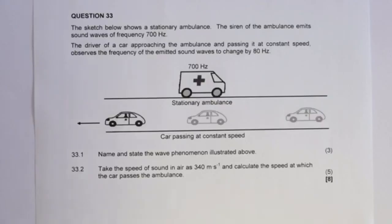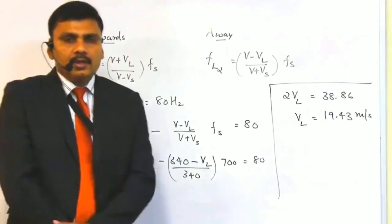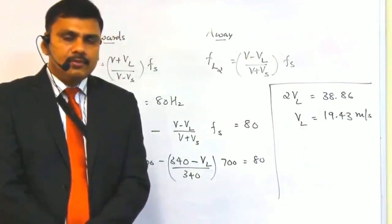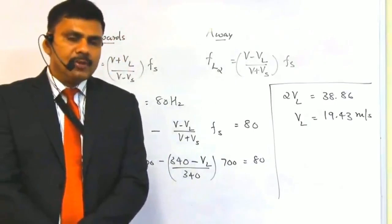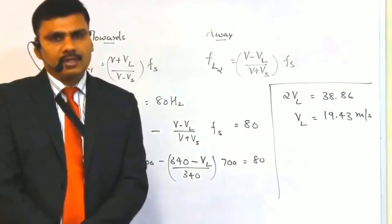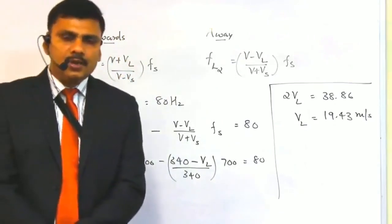The second numerical problem: a stationary ambulance has a siren emitting sound waves at 700 Hz. The driver of a car approaches the ambulance and then passes it at a constant speed, observing the frequency of the emitted sound waves to change by 80 Hz. The first question asks to identify and state the phenomenon, which is the Doppler effect — the apparent change in frequency when there is relative motion between the source of sound and the listener.